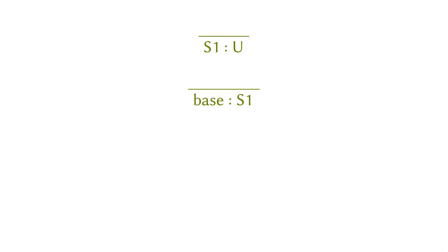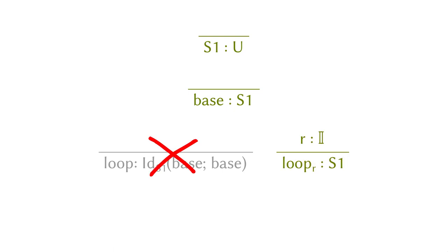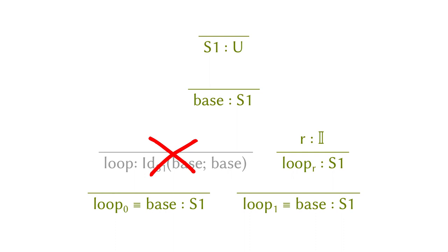We're also going to say that base is a point in the circle. However, the next constructor is different. The loop in the old approach is an element in the identification type of the circle — but we don't want that. We want to talk about the path in the circle directly without using the ID type. So instead, we're going to say that there's a loop constructor: for any point I in the standard interval, we give a point in the circle in a continuous way. Moreover, the loop is a path from base to base — the zero endpoint of the loop is judgmentally equal to base, and similarly for the one endpoint.